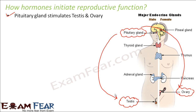When the pituitary gland wants to send a message to the testis to start secreting testosterone, it does so through a stimulating hormone. This hormone is released by the pituitary gland and sends the message to the testis. Similarly, there is a follicle stimulating hormone which sends the signal to the ovary. Once the message is received by the ovary, it gets stimulated to secrete the female sex hormone, estrogen.